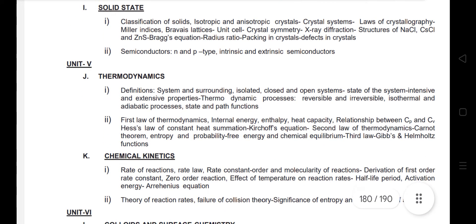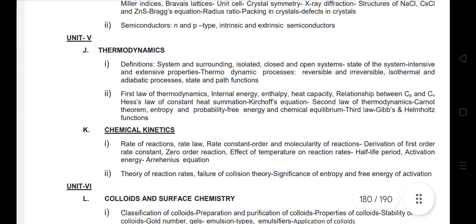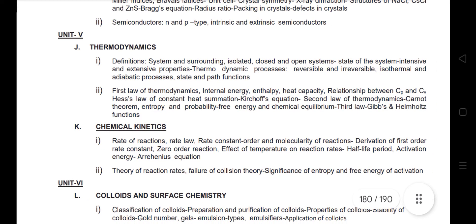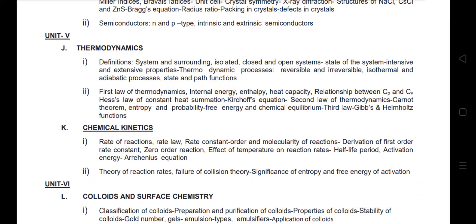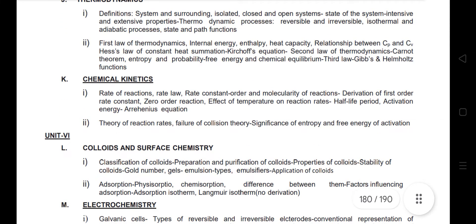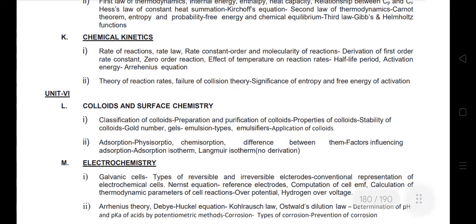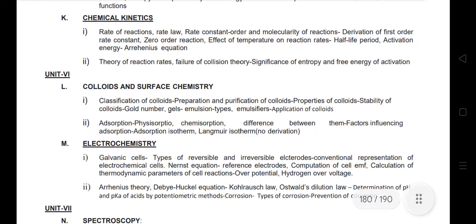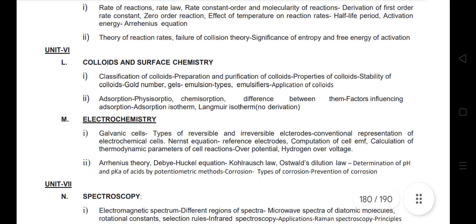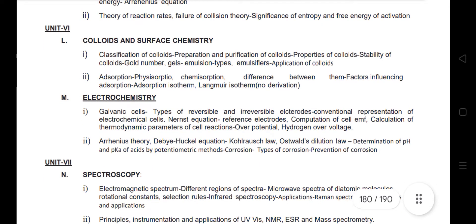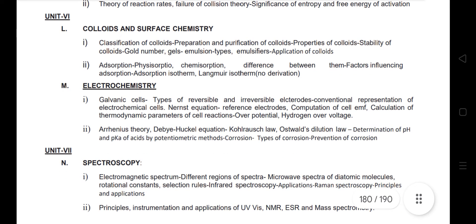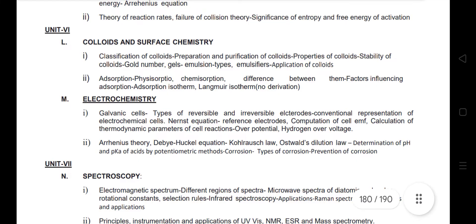Unit 5 covers thermodynamics and chemical kinetics, which is also more or less easy. Unit 6 is colloids and surface chemistry — surface chemistry and colloids are at the UG level. Next is electrochemistry, which is also at the UG basic level — very straightforward.